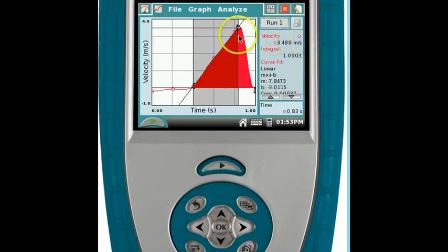So on this screen, we can see a summary of our analysis here. We can see that the area under the graph or the distance the object fell is given here. And we can also see that the acceleration of the object as it was falling is given here. 7.8 meters per second squared.